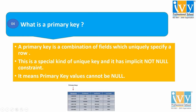One more important thing about primary key is that a table can have only one primary key, which may consist of single or multiple fields. In the example, we see in this table, student ID is the primary key. That means with the help of this unique student ID, we can identify each and every student.